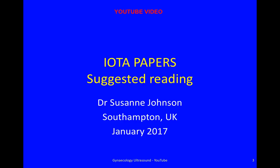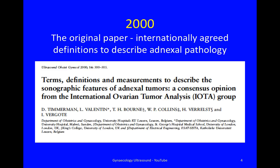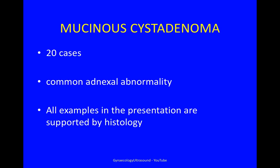There's also a video about IOTA papers, which are very useful to read prior to working out how to describe adnexal masses. This was the original paper from 2000, which is essential reading. I will show you 20 mucinous cyst adenomas. They are a common abnormality and all examples in the presentation are supported by histology.